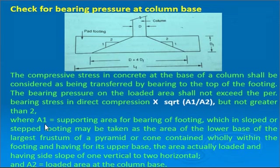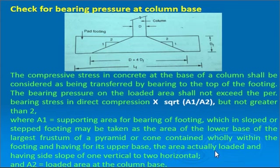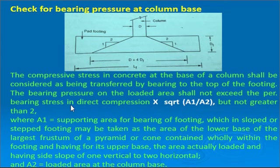A1 is the supporting area for bearing of footing, which in slope or step footing may be taken as the area of the lower base of the largest frustum of a pyramid or cone contained only within the footing, having its upper base as the actually loaded area and side slope of 1 vertical to 2 horizontal. A2 is the loaded area at the column base at the top. The ratio √(A1/A2) is multiplied by the permissible bearing stress.